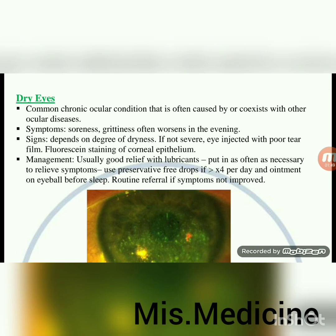Dry eyes — common chronic ocular condition often caused by or co-existing with other ocular diseases. Symptoms: soreness, grittiness, often worsens in the evening. Signs depend on degree of dryness; if not severe, eye injected with poor tear film and fluorescein staining of corneal epithelium. Management: lubricants as often as necessary; use preservative-free drops if more than 4 times per day; ointment on eyeball before sleep. Routine referral if symptoms not improved.